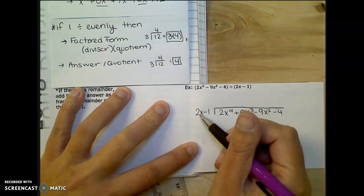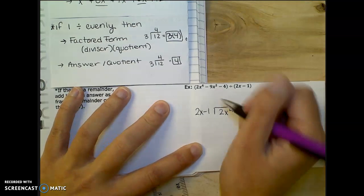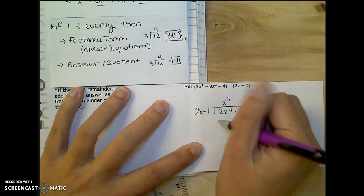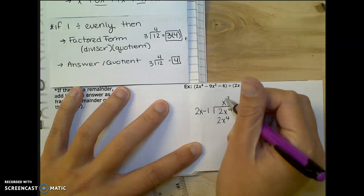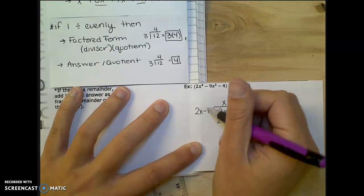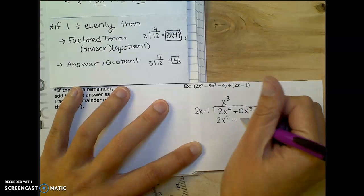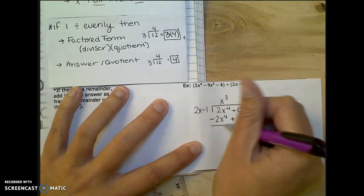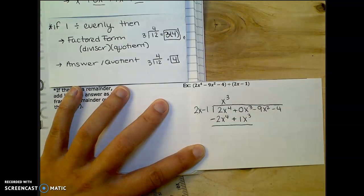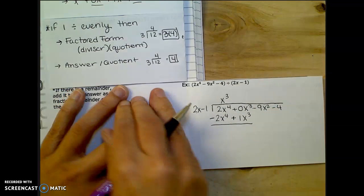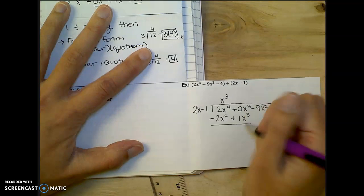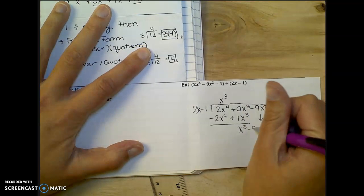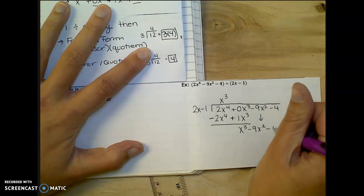And then I'm thinking what times 2x will get me to 2x to the third. So I'll get 2x to the fourth when I multiply. And then when I multiply here, I got negative 1x to the third. And then when I subtract, I'm really changing both the signs. Okay, so once I have that, I have no x to the fourths. But then 1x to the third. And I drop everything down. So minus 9x squared minus 4.